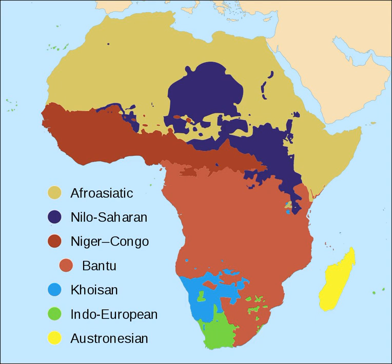Most languages spoken in Africa belong to one of three large language families: Afroasiatic, Nilo-Saharan and Niger-Congo. Another hundred belong to small families such as Ubangian and the various families called Khoisan, or the Indo-European and Austronesian language families mainly spoken outside Africa. The presence of the latter two dates to 2,600 and 1,500 years ago, respectively. In addition, the languages of Africa include several unclassified languages and sign languages.